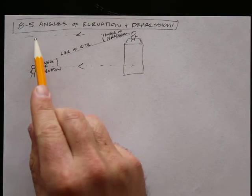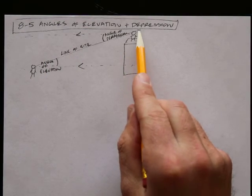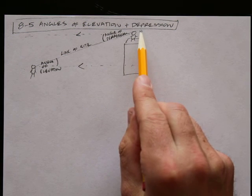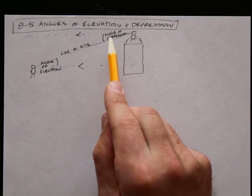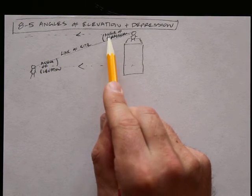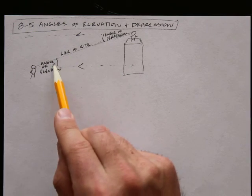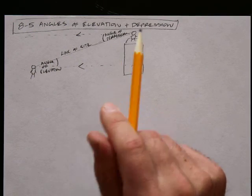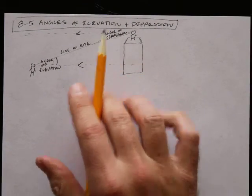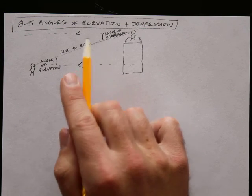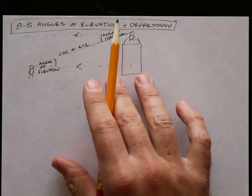Now notice, if I have two parallel lines and I have a line that goes through both of those, then in between here, the opposite interior angles of these guys is congruent. So the angle of depression and the angle of elevation are going to be the same. We're not really going to deal with them separately, they are the same thing.